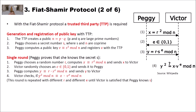Victor then checks if y squared mod n equals x times v to the power of e mod n. If this statement is true, he concludes that Peggy gave the correct answer for this round. This round is then repeated with different random numbers from Peggy and different random e values from Victor, until Victor is satisfied that Peggy knows s. If Peggy doesn't know s and e is 1, she cannot give the correct y, and the equation will not hold. In that case, Victor knows Peggy does not have the secret s.